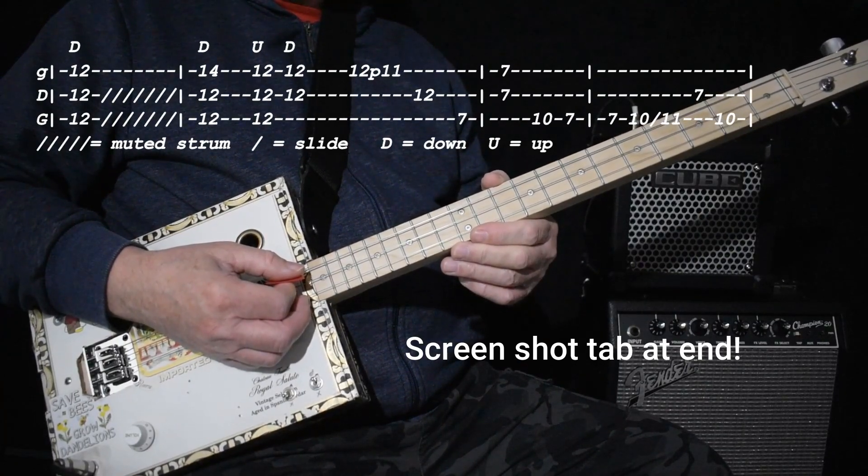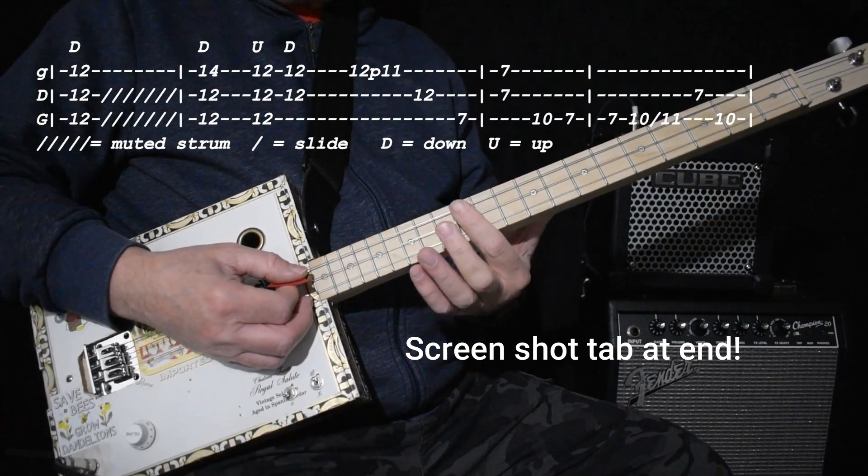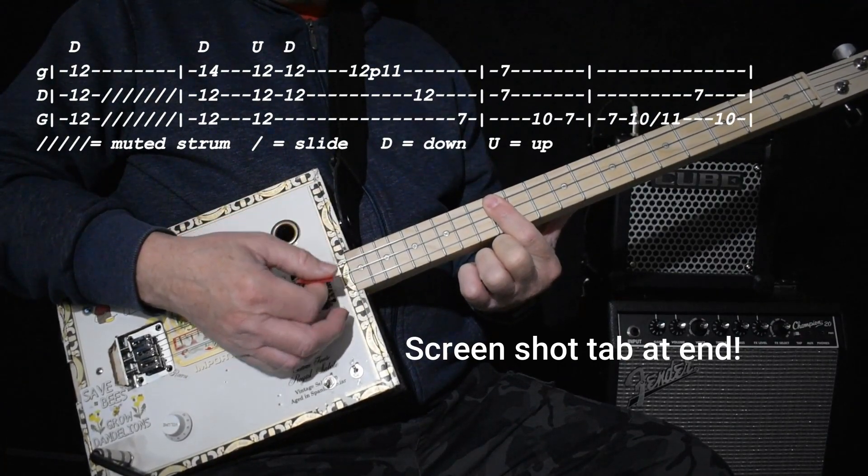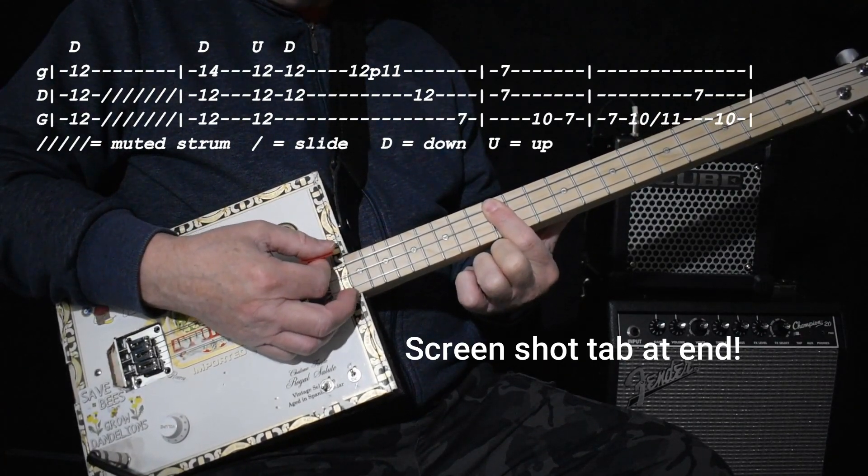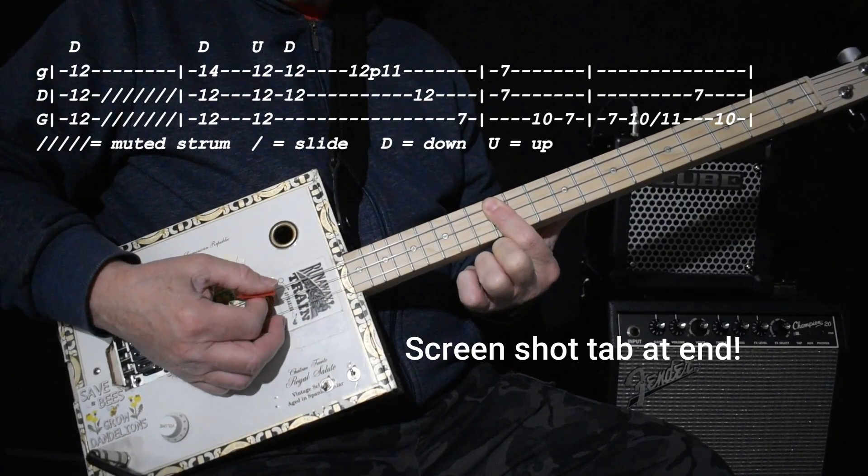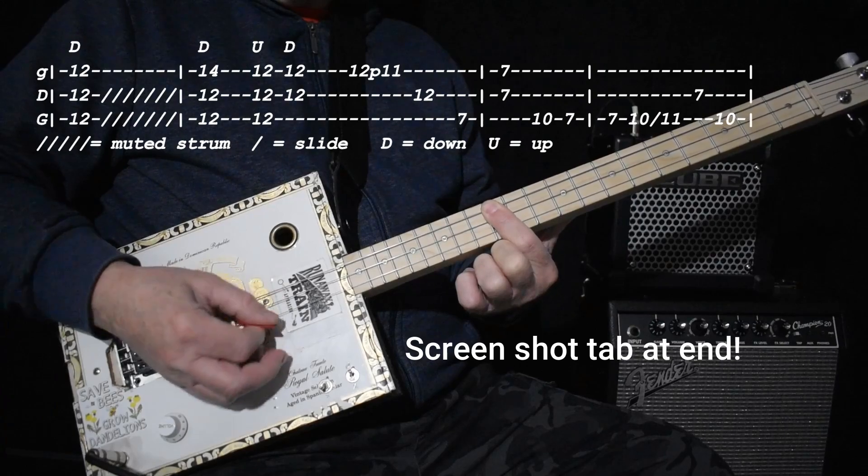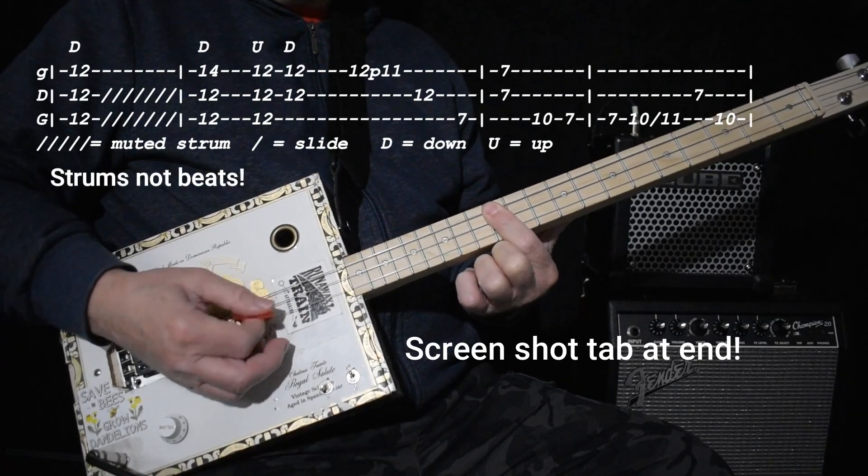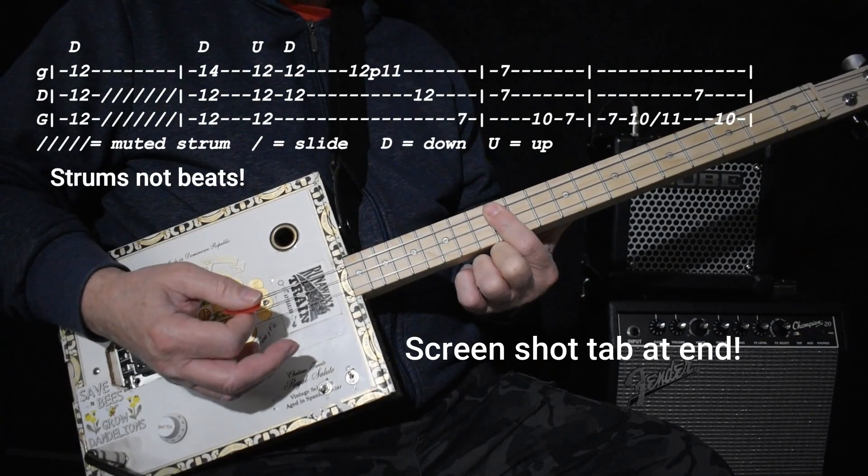Now the truly fun part, which is the intro. And it is doable. So we go up here to the 12th fret. And what we're going to do is we're going to play the 12th fret all the way across. And then we're going to mute. Basically six beats is how I look at it. Basically, actually a measure, pretty much.